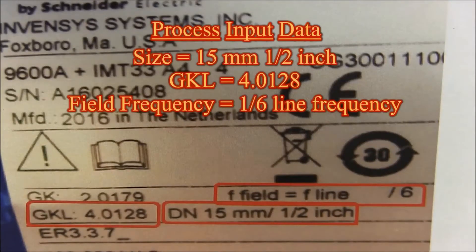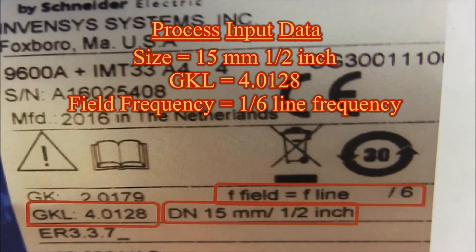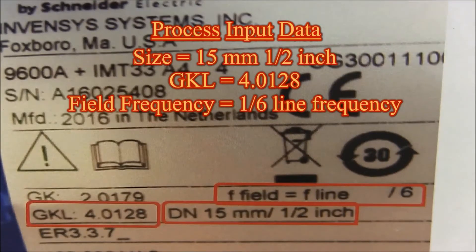For tube size, we will be entering in fifteen millimeters, one-half inch. For GKL value, we will enter in 4.0128, and for the field frequency, we will enter in one-sixth line frequency.